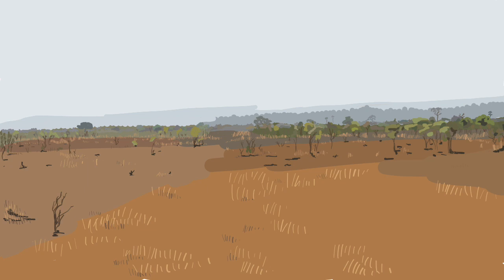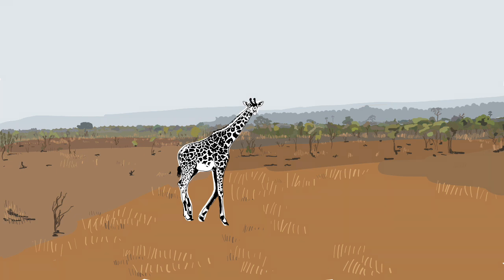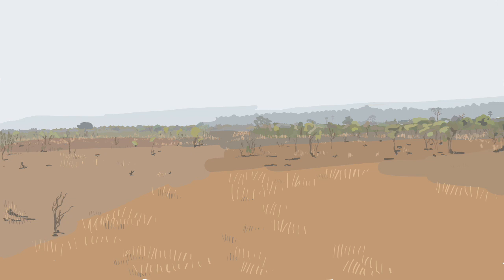Imagine an ecosystem, for example, a savannah. This ecosystem is in a certain state, described, for example, by the amount of vegetation.